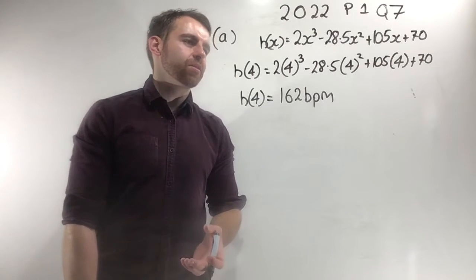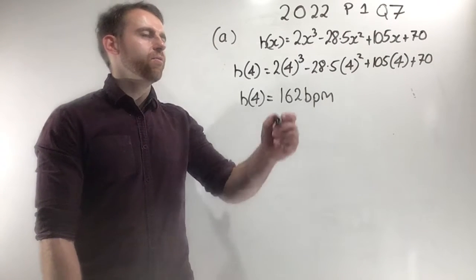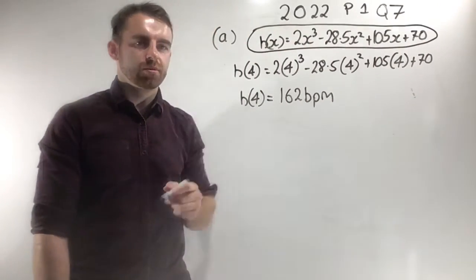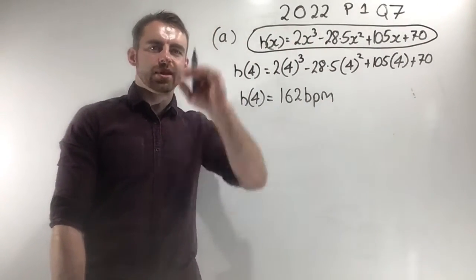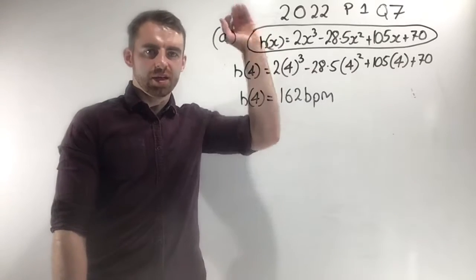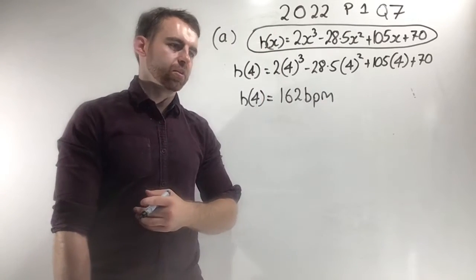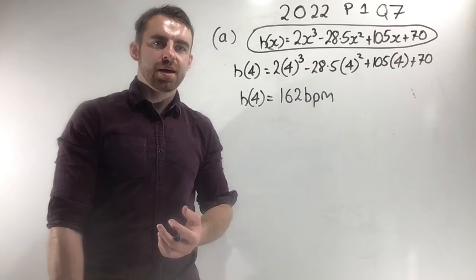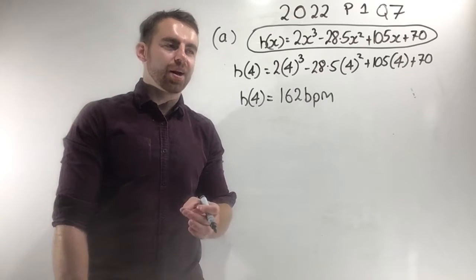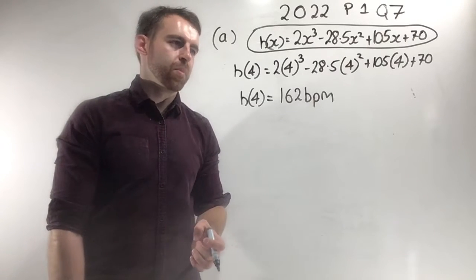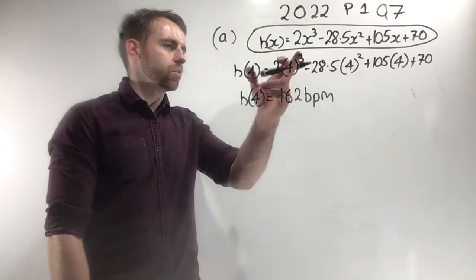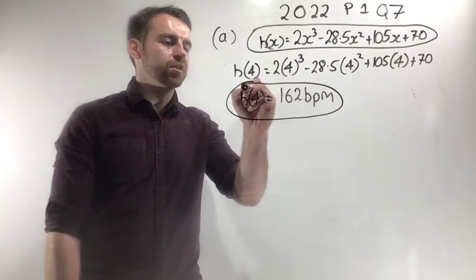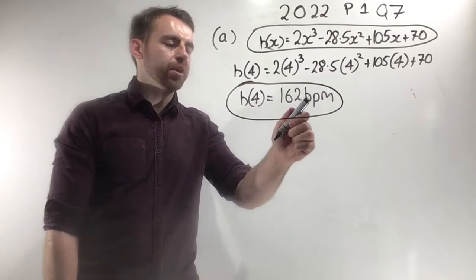We're told that Hannah is exercising and a function that describes her heart rate is this cubic function. So her heart rate is going to increase, then decrease, then increase again as she exercises. We're told that x is in minutes and we're asked to work out Hannah's heart rate after 4 minutes. You just sub in x equals 4 and plug it into your calculator, and your answer is 162 beats per minute.